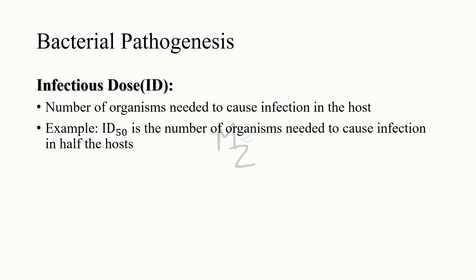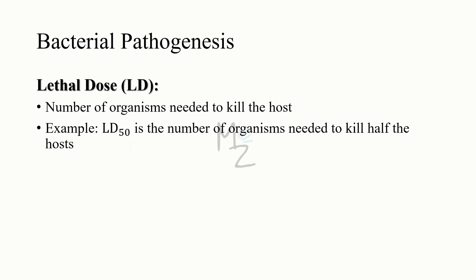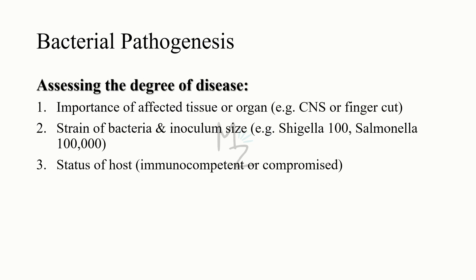When talking about virulence, it's important to know some terms. Infectious dose, denoted ID, is the number of organisms needed to cause infection in the host. ID50 is the number of organisms needed to cause infection in half the hosts. Lethal dose, denoted LD, is the number of organisms needed to kill the host. LD50 is the number of organisms needed to kill half the hosts. Prior to treating bacterial infection, we should first assess the degree of the disease using three important points.